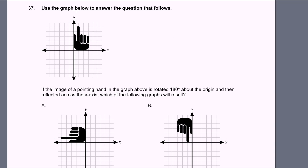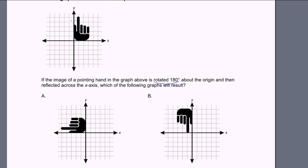Problem 37. Use the graph below to answer the question that follows. We have this little drawing of a hand pointing up. If the image of a pointing hand in the graph above is rotated 180 degrees about the origin and then reflected across the x-axis, which of the following graphs will result? So let's do it step by step. If you rotate it 180 degrees, you're rotating it like this around the origin.